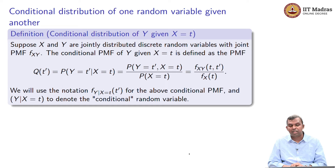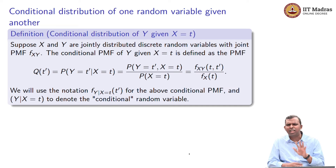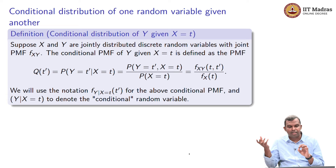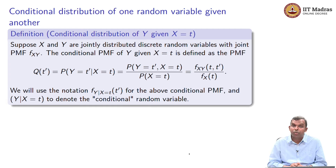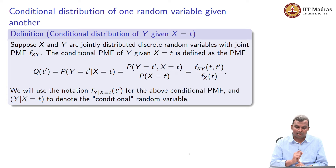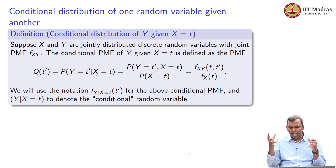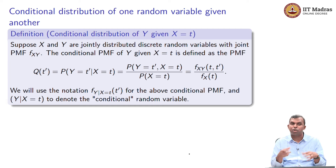The conditional PMF is basically the probability that Y equals T prime given X equals T. You can just do this calculation — it is an ordinary conditional probability: probability of Y equals T prime given X equals T is probability of Y equals T prime AND X equals T (comma means and) divided by probability that X equals T. The numerator is the joint PMF F_{X,Y}(T, T prime). We will use the notation: Y given X equals T is the conditional random variable, and its distribution is written as F_{Y|X=T}(T prime).